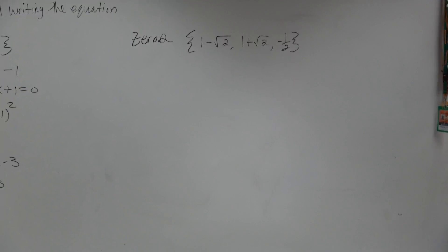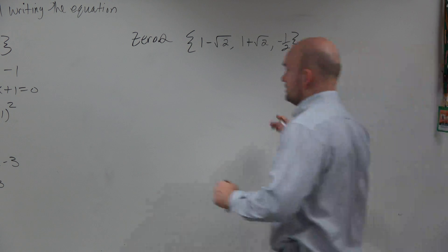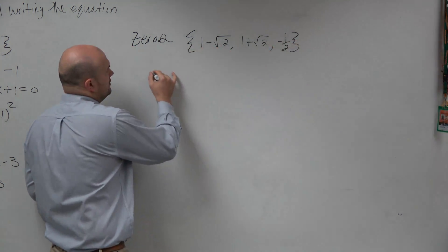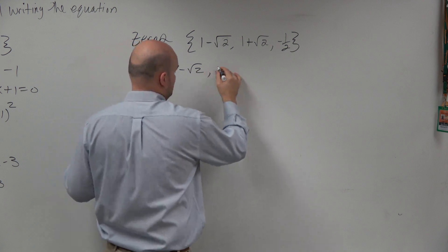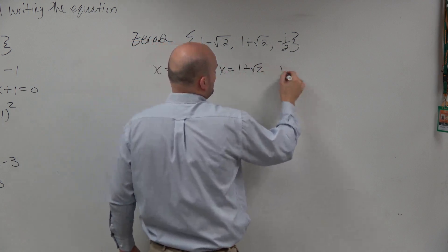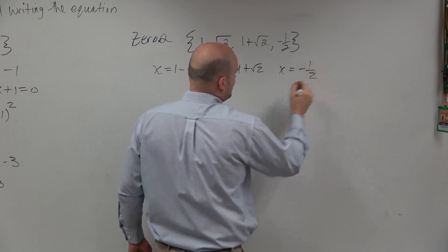So in this example, if these are our zeros: x equals 1 minus the square root of 2, x equals 1 plus the square root of 2, and x equals negative one-half.